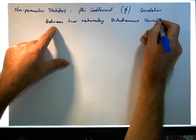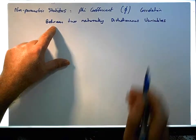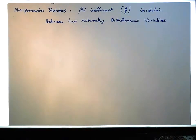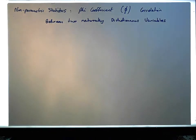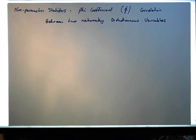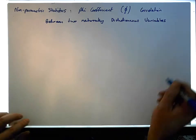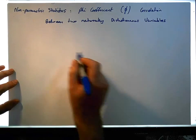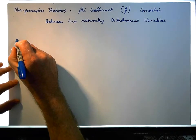The formula actually looks a little bit complicated, but it's quite straightforward. It just contains additions, subtractions, multiplications, divisions, and a square root. The formula for the phi coefficient looks something like this.